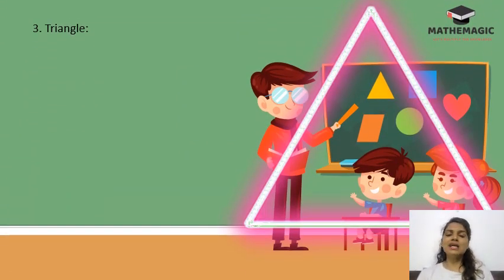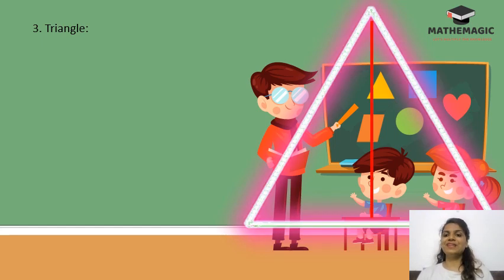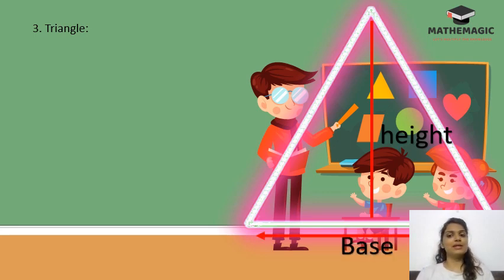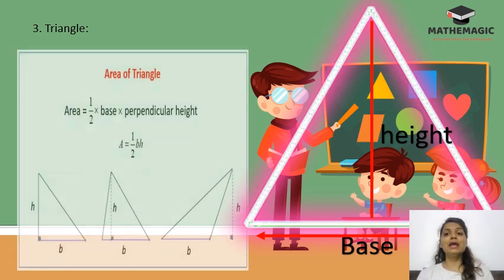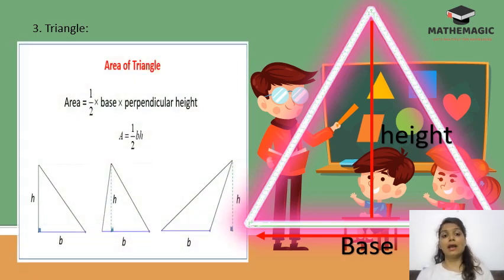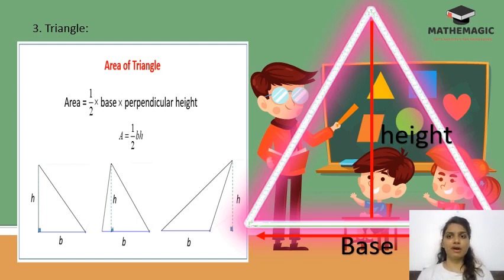The third shape is a triangle. A triangle has a height and a base. The area of a triangle is half × base × height — first multiply the base by the height, then divide by 2, and you get the area of the triangle.